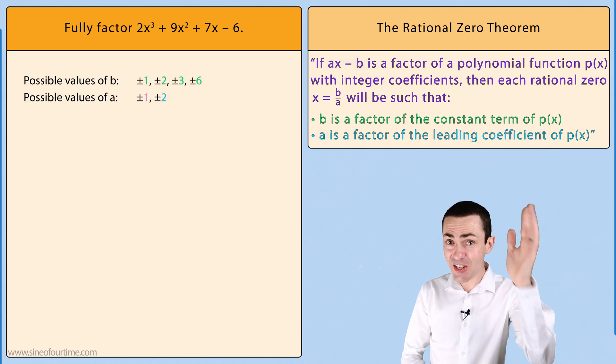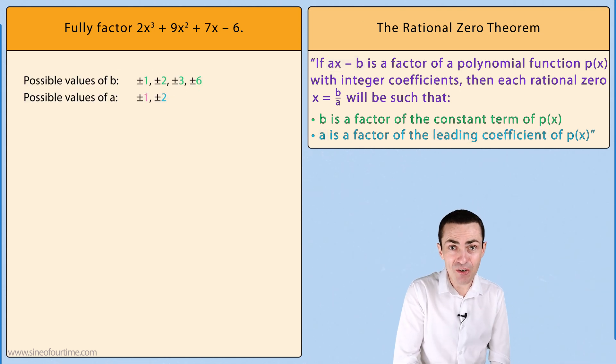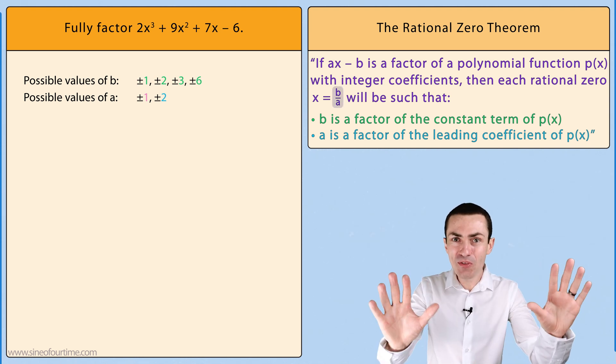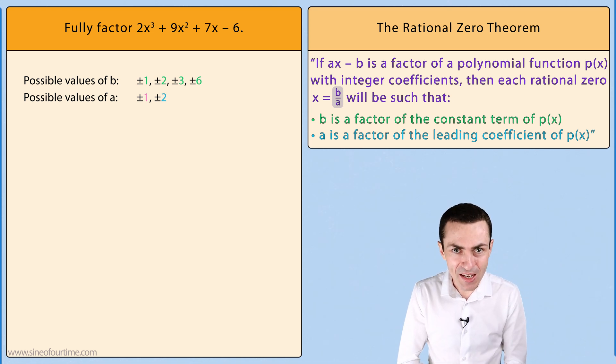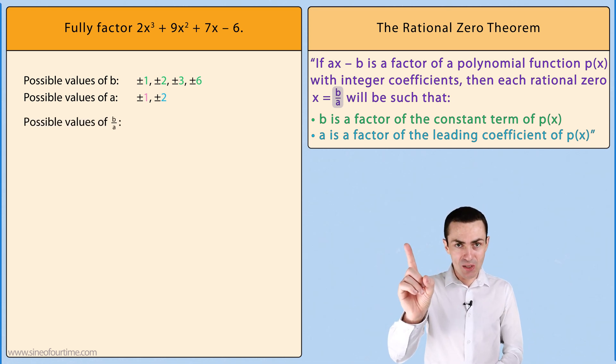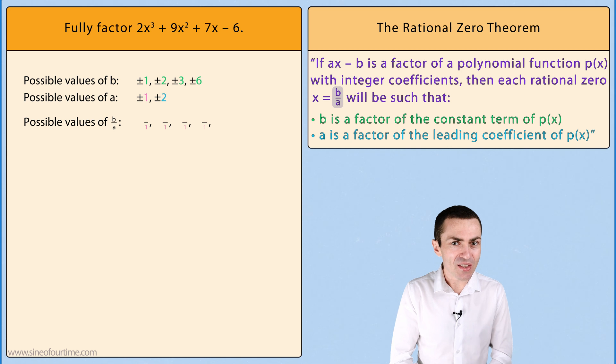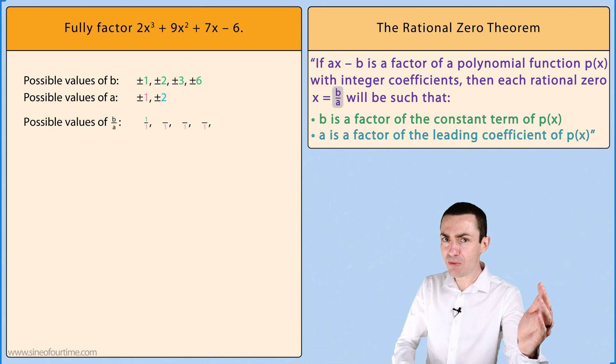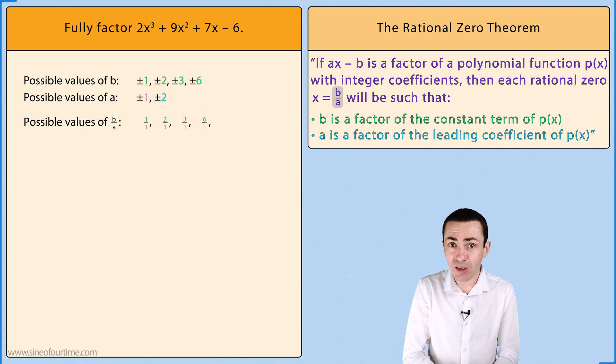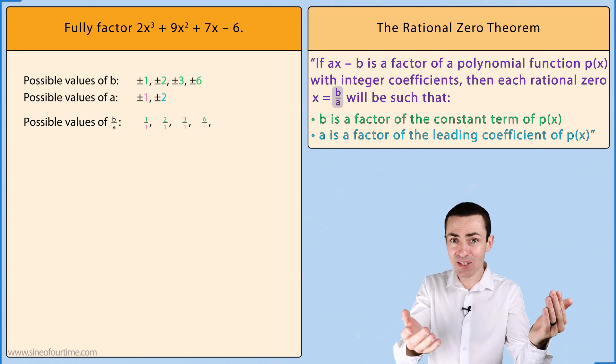According to the rational zero theorem each rational zero will have the form b/a. So let's work to create a list of all of the possible values of b/a starting with a = 1. We get 1/1, 2/1, 3/1 and 6/1. And we should not forget to include both positive and negative values.